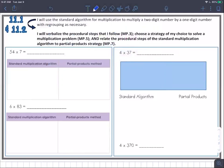So standard algorithm, I would write 54 times 7. It's very important to line up the place values. 4 times 7 is 28. You do have to regroup. 5 times 7, or 5 tens times 7, is 35. Add the 2 at the top: 37.